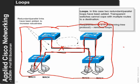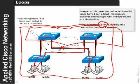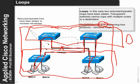At the distribution layer we typically have redundancy built in, while the access layer is less important in this regard. The Spanning Tree Protocol must analyse the available routes and decide the best one, then keep all switches updated on the optimal routes.